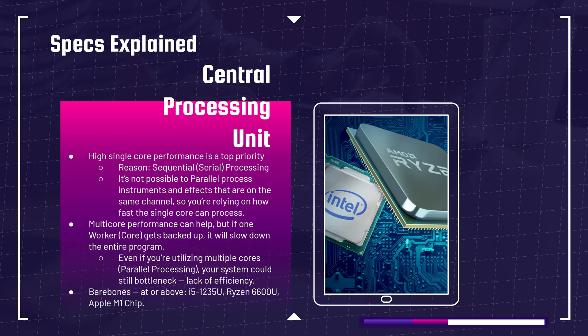We're going to start in the budget category and work our way up to high end, but first I want to discuss the components. Starting with the CPU, the central processing unit — high single-core performance is a top priority. The reason is sequential serial processing. In a DAW, it is not possible to parallel process instruments and effects on the same channel, so you have to wait for one instrument to finish before the next instrument will be processed on that singular channel.